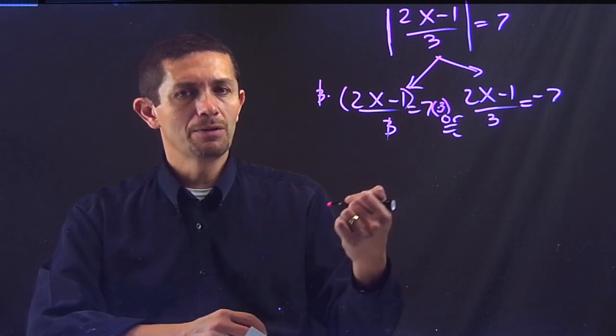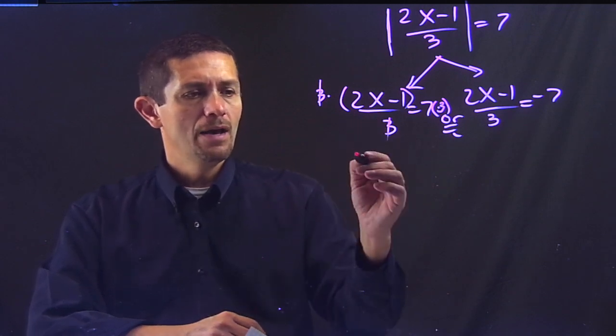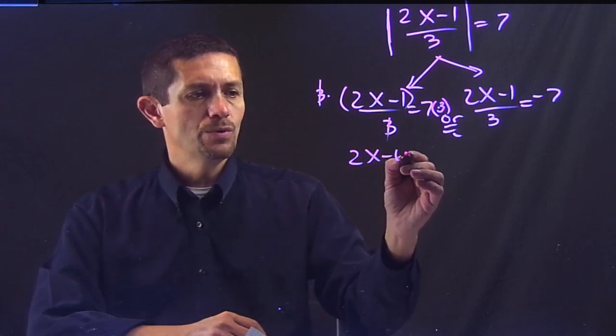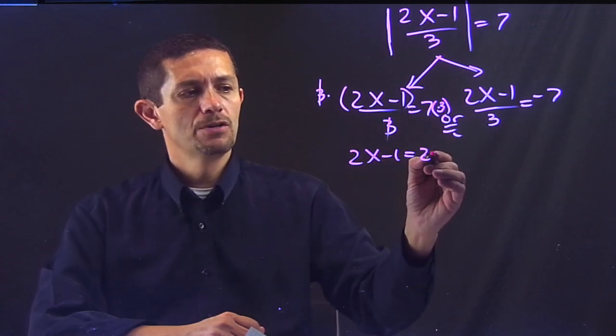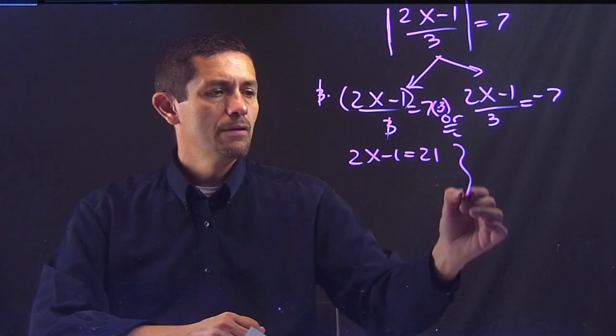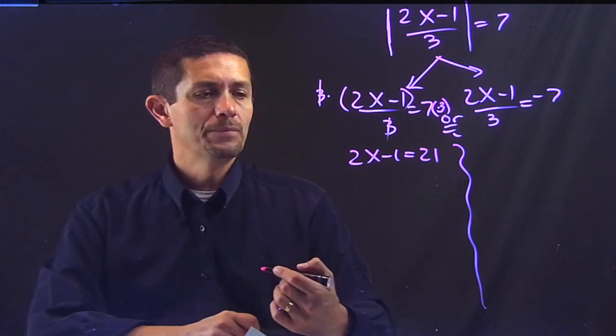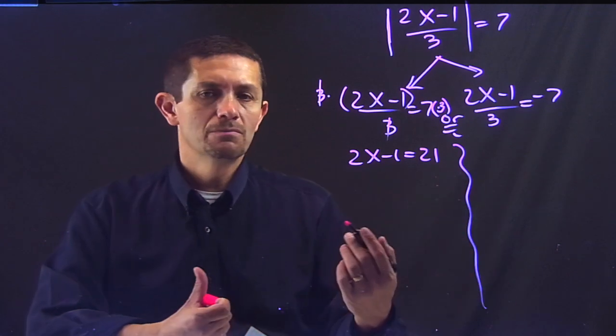Alright? The 3s will cancel. 3 divided by 3 is 1, so I cancel it out. And I'll have the 2x minus 1 on top. On the other side, I have 7 times 3, which is 21. Let me make a little line over there. And from here, I just finished solving it.